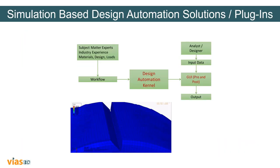How do we typically approach simulation and automation solutions for particular problems? We have subject matter experts with industry experience in performing analysis. Based on their knowledge and experience, we develop a workflow to perform design and automation, then develop the script for a particular problem. Based on client inputs, we develop a tool that can get the desired output. This is essentially how we work with solution automation.